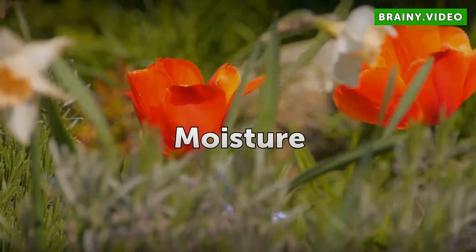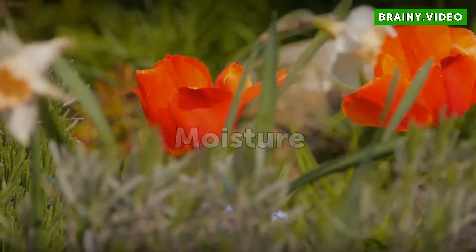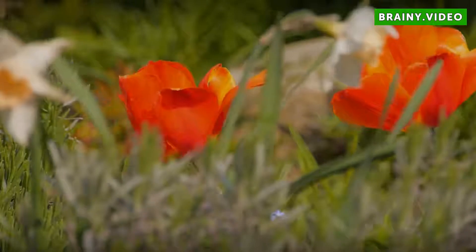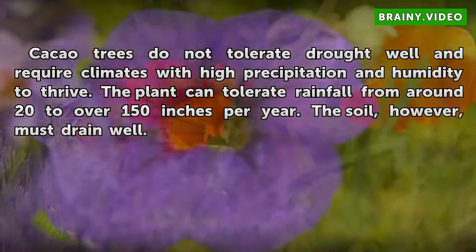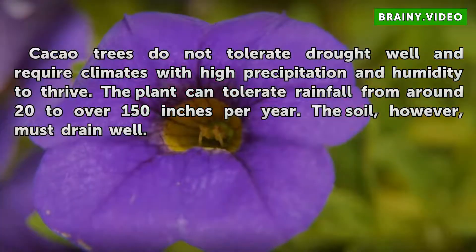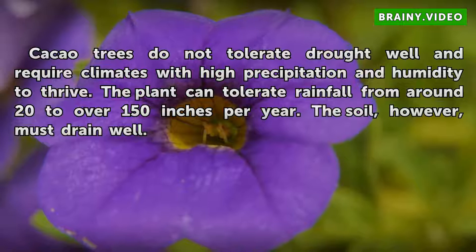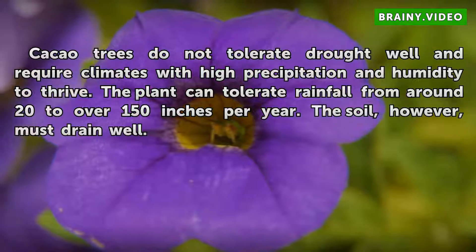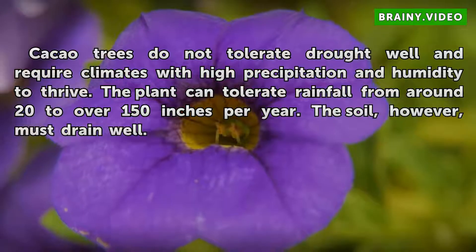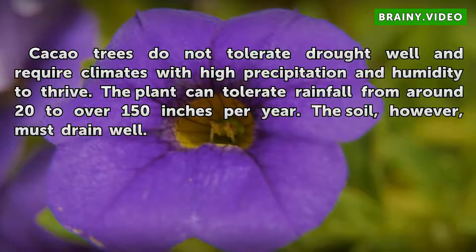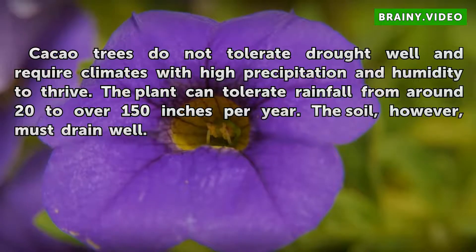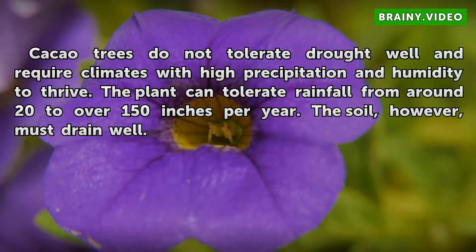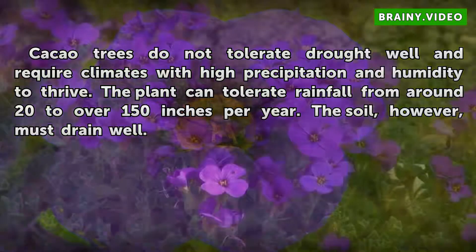Moisture. Cacao trees do not tolerate drought well and require climates with high precipitation and humidity to thrive. The plant can tolerate rainfall from around 20 to over 150 inches per year. The soil, however, must drain well.